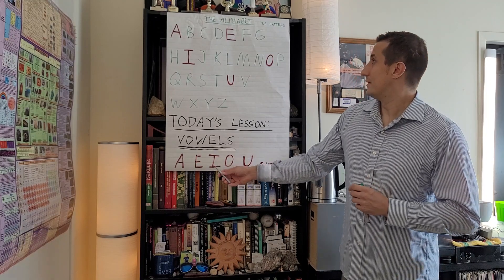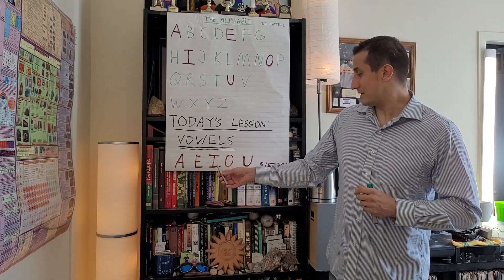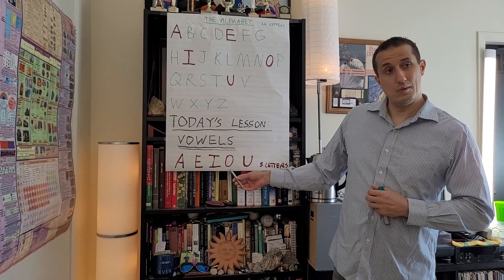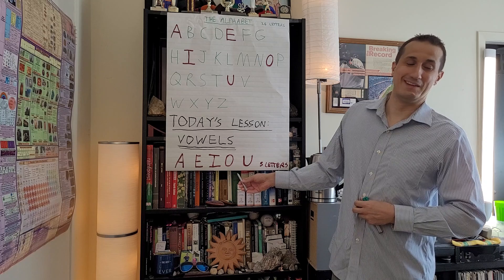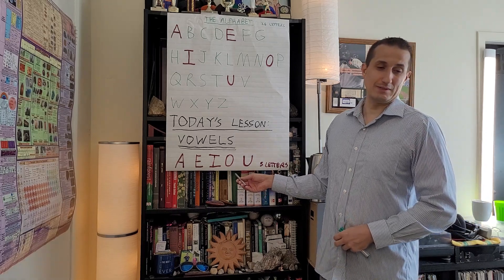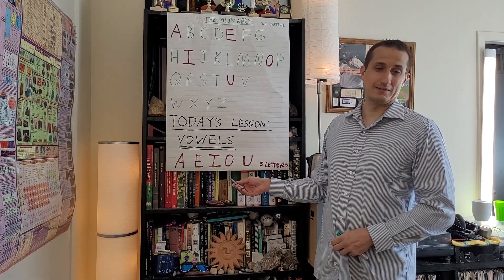Like I can be 'ee,' right? It can be O—letter O—like Shek O. Has anyone been to Shek O? Anyone know where Shek O is? It's in South Hong Kong Island.